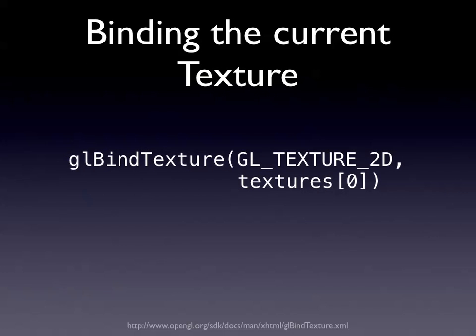To use a texture, bind it with GL_BindTexture. The GL_TEXTURE_2D part says you're working with a 2D texture - you can work with other dimensions but 2D is most common. Texture0 is just that first ID number. Binding is like GL_MatrixMode - it says 'I want to work with this texture now.'